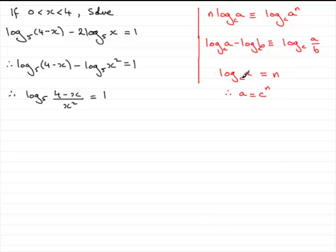So the c is the 5, the a is 4 minus x over x squared, and the n is the 1. So if we remove the log now, we've got a, which is 4 minus x over x squared, is equal to c, which is the base, so that's 5 to the power n, n being the 1. So that's what we have.